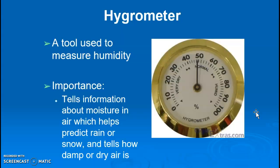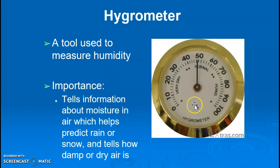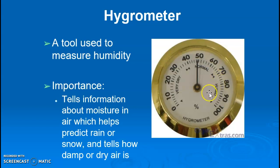A hygrometer is a tool used to measure humidity — the amount of moisture in the air. With this information, meteorologists can predict whether rain or snow is coming.